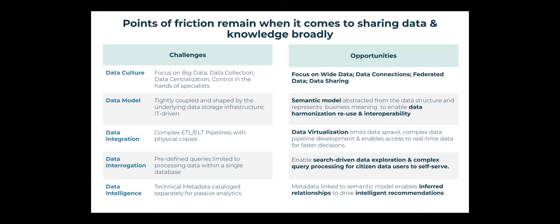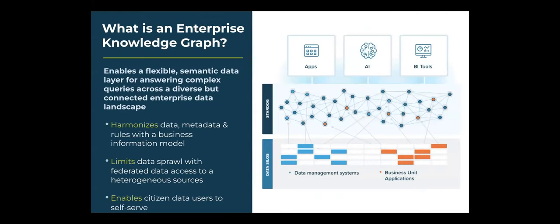An enterprise knowledge graph is exactly what is needed. It enables a flexible semantic data layer for answering complex queries across a diverse but connected enterprise data landscape. It harmonizes data, metadata, and rules with a business information model, limits data sprawl with federated data access to heterogeneous sources, and enables citizen data users to self-serve and participate in the data process itself. At the end of the day, you want to serve the largest swath of business users, allowing them to independently work with data and gain insights to drive decisions.